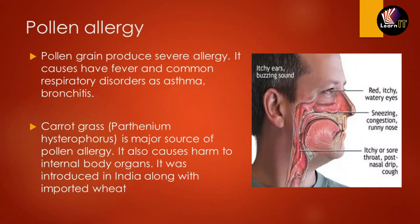Pollen allergy is also a major topic of this chapter. Pollen can cause severe allergies in some humans, including fever and respiratory diseases such as asthma and bronchitis. An example is carrot grass, known as Parthenium hysterophorus, which is a major source of pollen allergy for many organisms. It was introduced into India along with imported wheat from different countries.